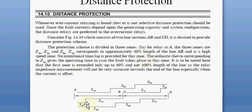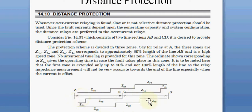Consider this scheme: there are two lines — line AB and line CD. The locations at points A, B, C, D are the locations of the relays. The entire line length, the entire system, is divided into three zones of protection.